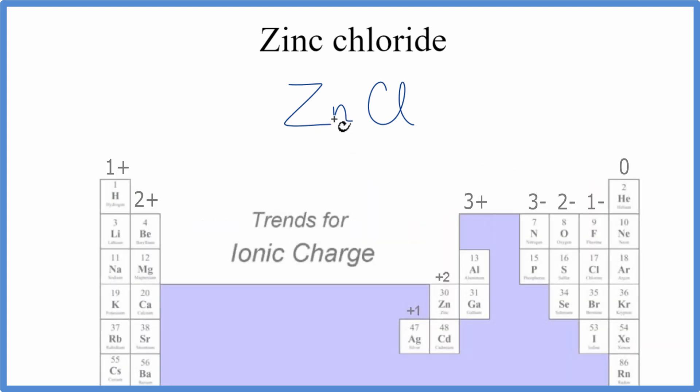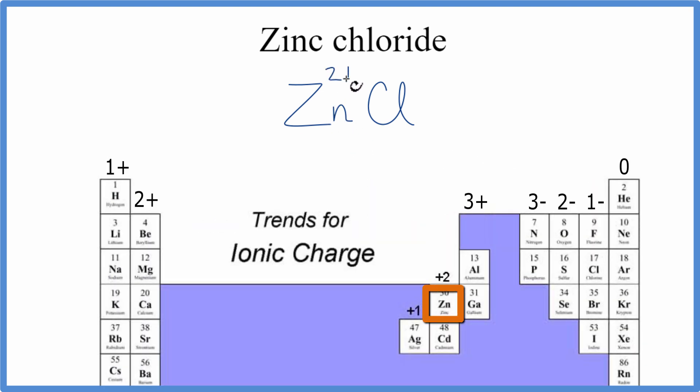Zinc is a bit of an odd one—it's a transition metal, but it always has an ionic charge of plus two. Chlorine has an ionic charge of one minus.